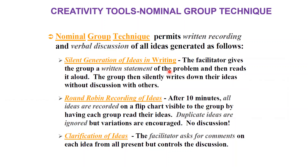The first step is you have to write down ideas silently. Then next, go for a round robin where you can record ideas — any duplicate ideas you can ignore. You have to classify the ideas with the help of a facilitator when they ask for any comments, and here you need to have a facilitator as well.